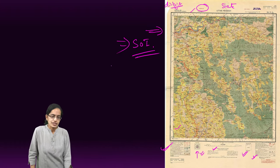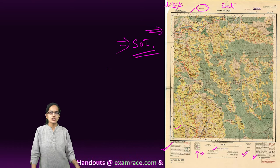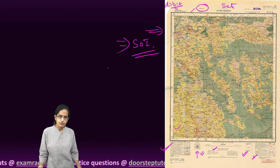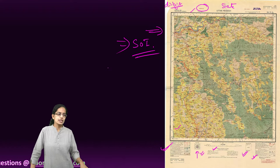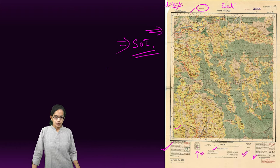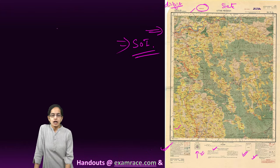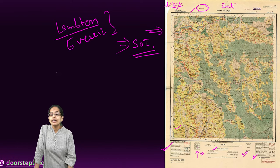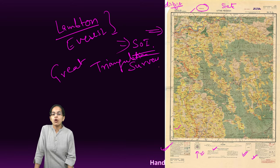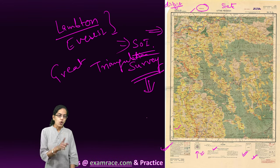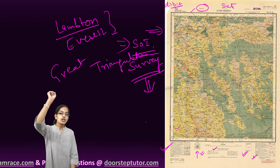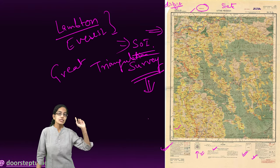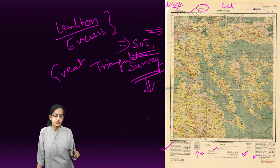This area actually represents the Tehri Garhwal district of then Uttar Pradesh, now Uttarakhand. Survey of India is India's central engineering agency in charge of all mapping and surveying. It is one of the oldest engineering departments of the government of India, established by British India or the East India Company. Under this, William Lambton and George Everest started the Great Triangulation Survey, which was the basis for most topo sheets, including a triangulation survey for Mount Everest, K2, Kanchenjunga, and demarcating British territories.